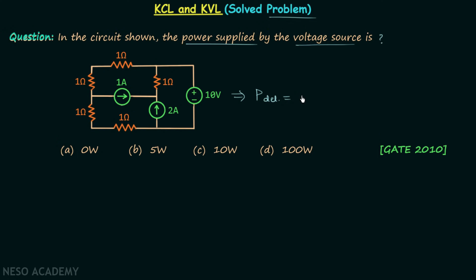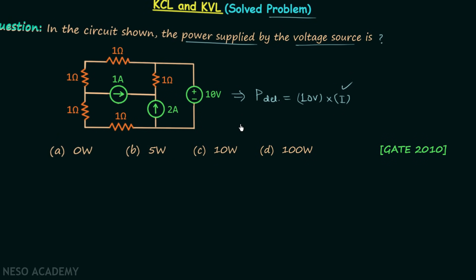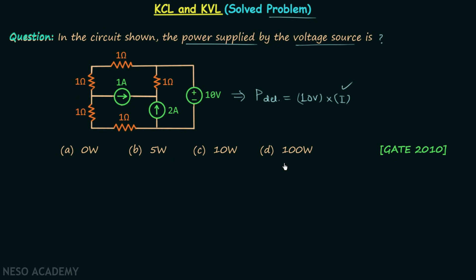Voltage is given as 10 volts but we need the current. Let's say current is I, so our main task is to find out this current I, and once we have the current I we can find the power delivered. There are four options given in the question, and this question is taken from the GATE Instrumentation 2010 exam.